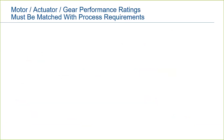Now that you understand the two basic motor types, let's discuss performance ratings. This is an important section, as it is critical that the actuator, motor, and gearing be selected to match your process requirements. If underspecified, the actuator may not perform to the application requirements, but over-specifying will drive up cost without benefit to the end user in a simple application.